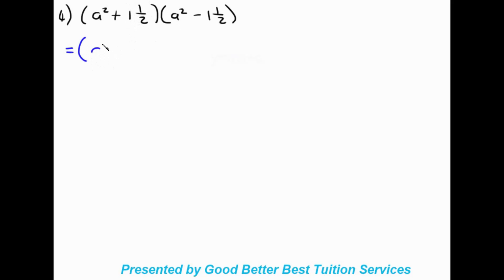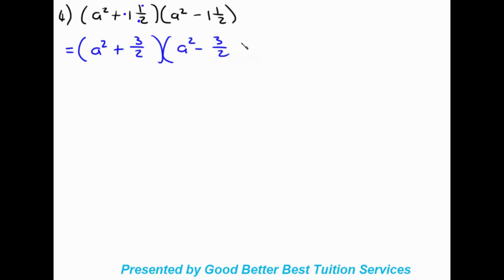Our fourth and final example: we have (a squared plus 1 and a half) times (a squared minus 1 and a half). When working with fractions, we never want to deal with mixed numbers, so we immediately convert them to improper fractions. For 1 and a half: 2 times 1 gives 2, plus 1 gives 3, so it becomes 3 over 2. Both mixed numbers convert to 3 over 2.